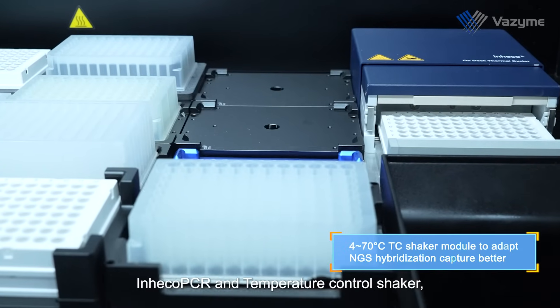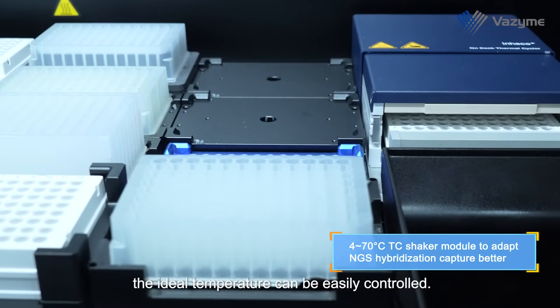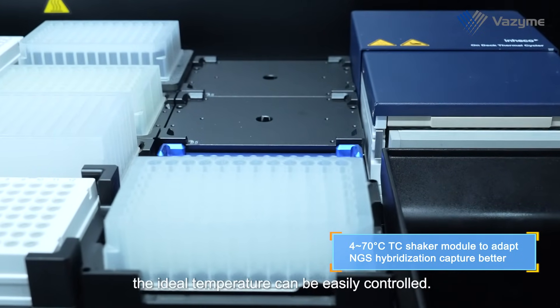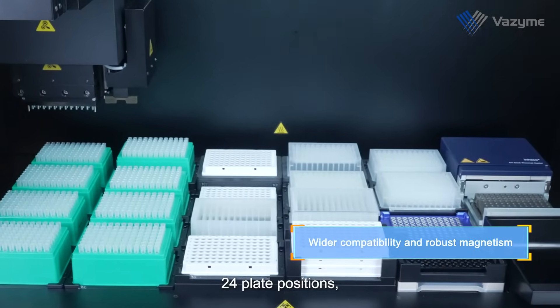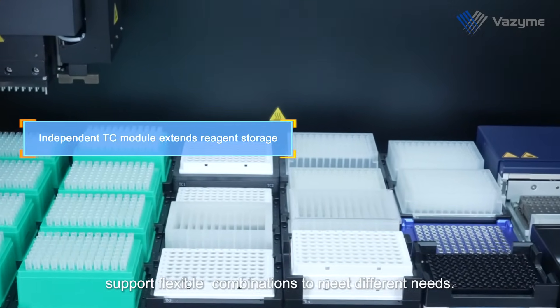In HECO PCR and temperature control shaker, the ideal temperature can be easily controlled. 24 plate positions. Support flexible combinations to meet different needs.